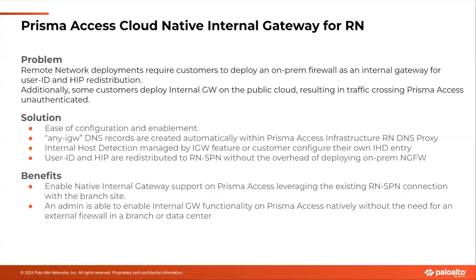With this new feature — the native internal gateway for remote networks — the main idea is that Prisma Access will start to maintain a DNS entry for the internal host detection and will assign an IP address for the RN node as the internal gateway. So customers no longer need to deploy any extra hardware in their branch. Any user entering the branch and being determined as being on the internal host will connect to the internal gateway and connect to the RN gateway.